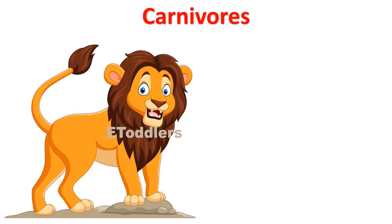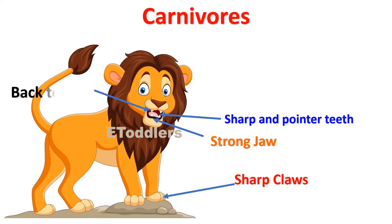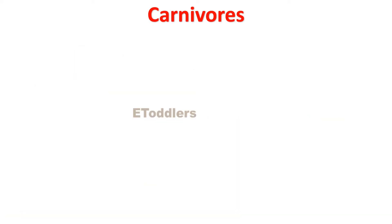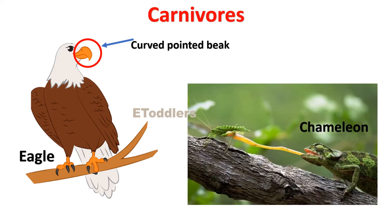For tearing the flesh, carnivores have sharp and pointed teeth, sharp claws, and very strong jaws. They also have strong back teeth which help them to chew flesh. Carnivore birds such as the eagle have curved, pointed beaks for tearing flesh.